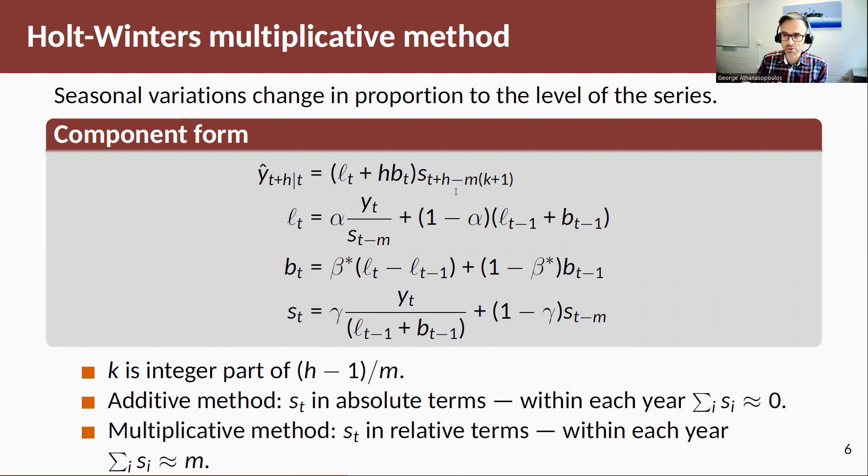K is again the same integer part of H minus 1 divided by M. So again, selects the last seasonal period that we've estimated and we use that seasonal component, that seasonal index. The thing to note here is that with an additive method, ST in absolute terms is close to, the sum of the seasonal indices within a year is equal to 0, or close to 0, approximately equal to 0. With a multiplicative method, the S is in relative terms and within each year, the sum of these S's is equal to M, the seasonal period.